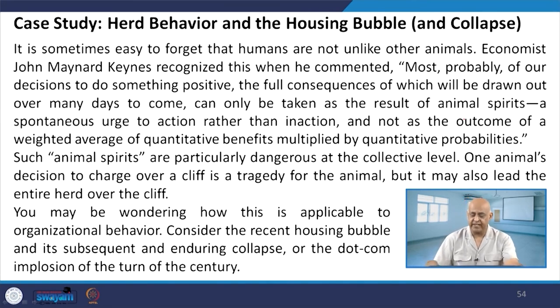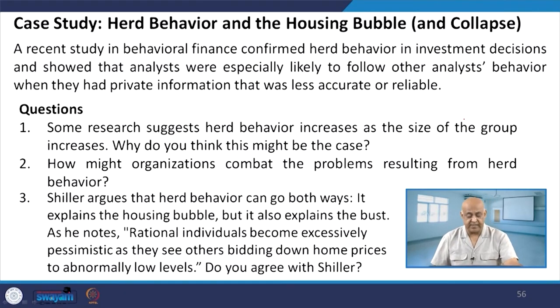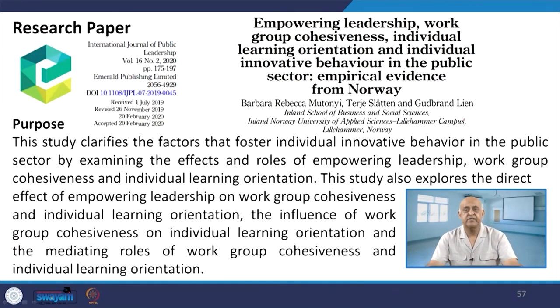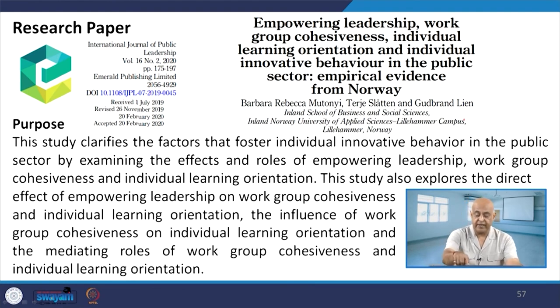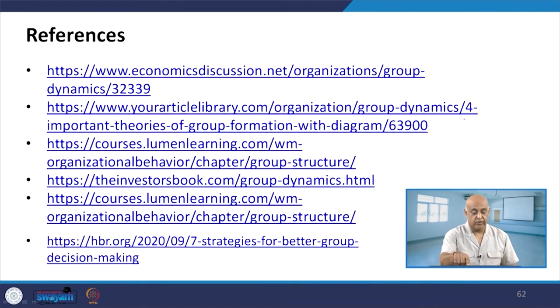The case study is about herd behavior in housing bubbles, which will suggest what the size of a group should be — as the seven strategies noted, the group size should be small. A research paper on empowering leadership, work group cohesiveness, individual learning orientation, and individual innovative behavior in the public sector, with empirical evidence from Norway, is also recommended. The book recommendation is on team interventions and group dynamics. These are the references for further study. This is all about group dynamics and maximizing group performance and productivity.